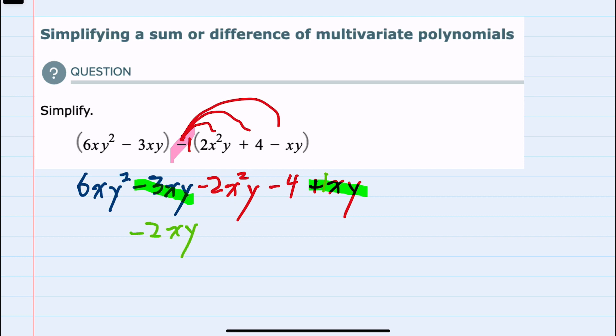And those are the only like terms. The first term is an xy². Since it's the only xy² there's nothing to combine it with. This next term here is a minus 2x²y which again is the only x²y, so nothing to combine it with. We have one integer here, minus 4, nothing to combine it with. So this would be our simplified expression.